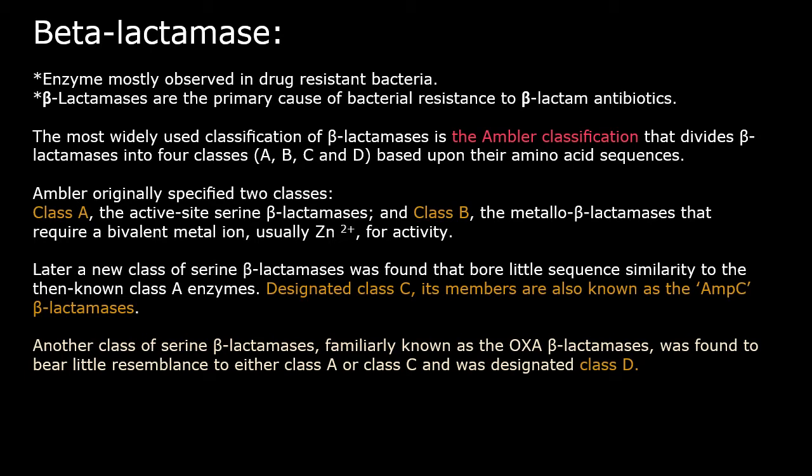How did the fourth class come into picture? Another class of serine beta-lactamases, familiarly known as the OXA beta-lactamases — where OXA stands for an antibiotic abbreviation — was found to bear little resemblance to either class A or C. The resemblance is with class A and C; class B is not in picture here. So those which had this resemblance were designated as class D. Class C has little sequence homology from only class A enzymes, and class D has some resemblance with A or C.